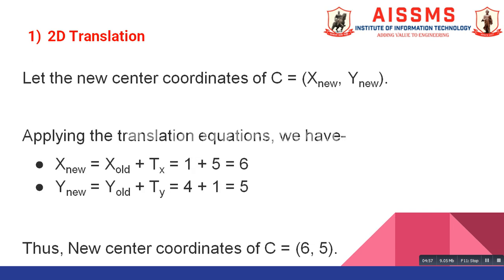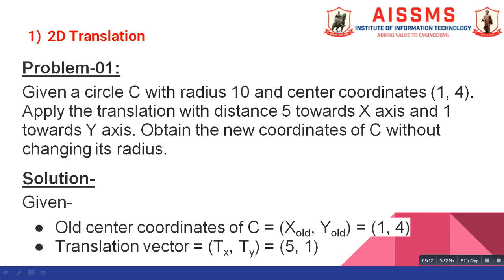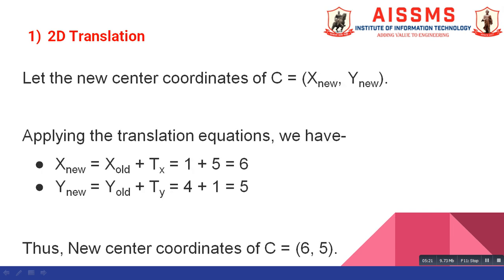Now, we relate the center coordinates of C as X new comma Y new. Applying translation equation, we get X new equal to X old plus TX. Our X old is 1 and TX is 5 which is given to us in our problem statement. You can see over here. So, we just put those values over here. And the value that we get for X new is 6.